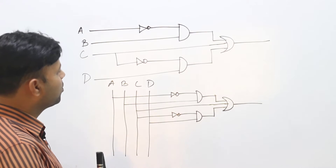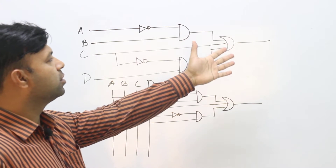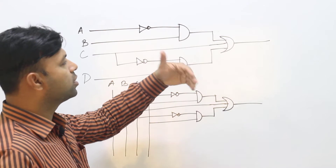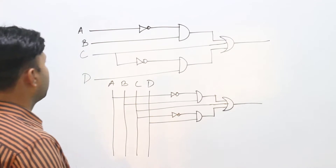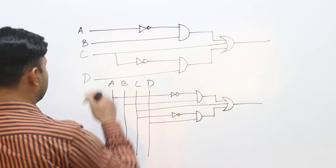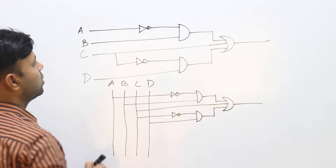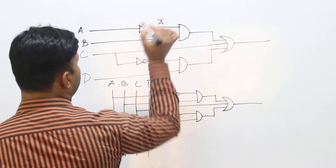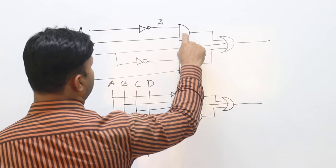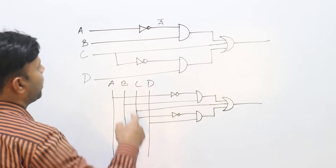We have to do the same thing. We will be able to perform a logical function with a logical function. So, let's say that A will be the input. What is it? It is A bar. Then, a gate is called NOT gate. NOT gate gives A bar.